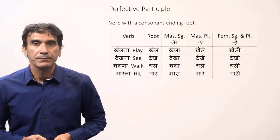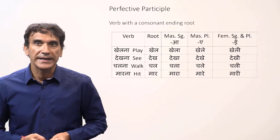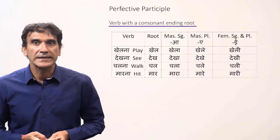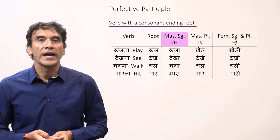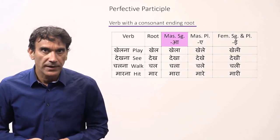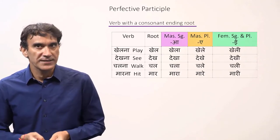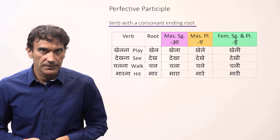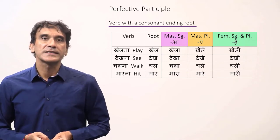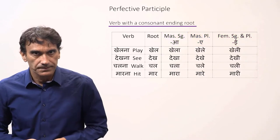To make the perfective participles, you need to add the endings to the root of the verb. For the consonant ending roots, you add -a for the masculine singular participle, -e for masculine plural, and -i for feminine singular and plural. Here is the table — you can see the participles of the verbs with the consonant ending roots.